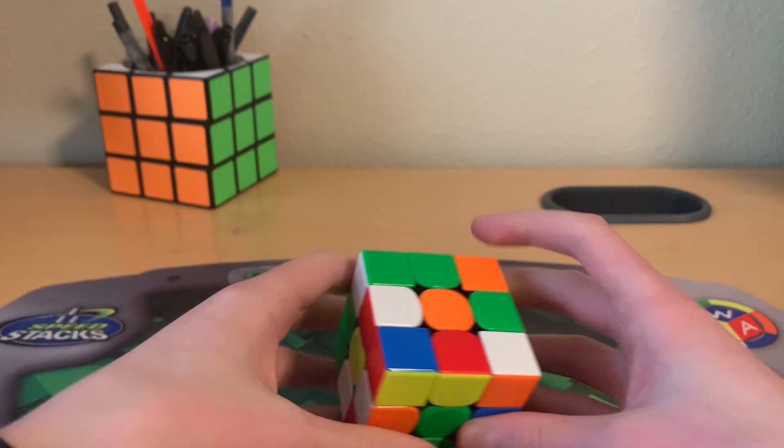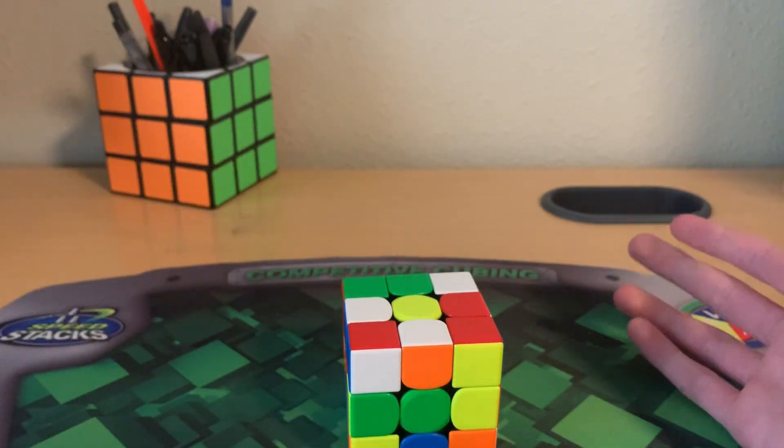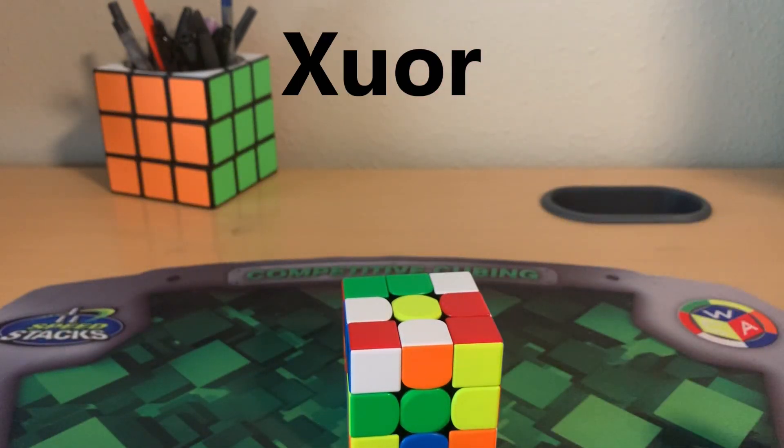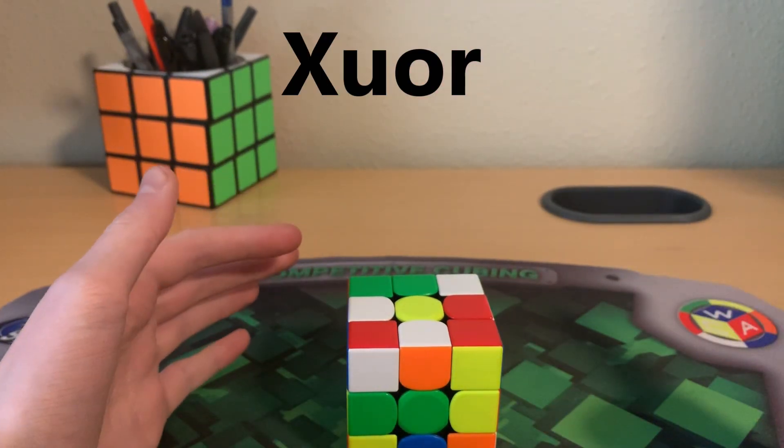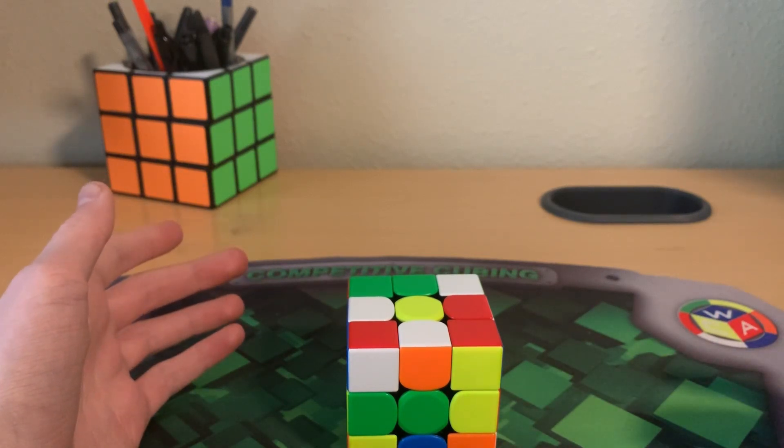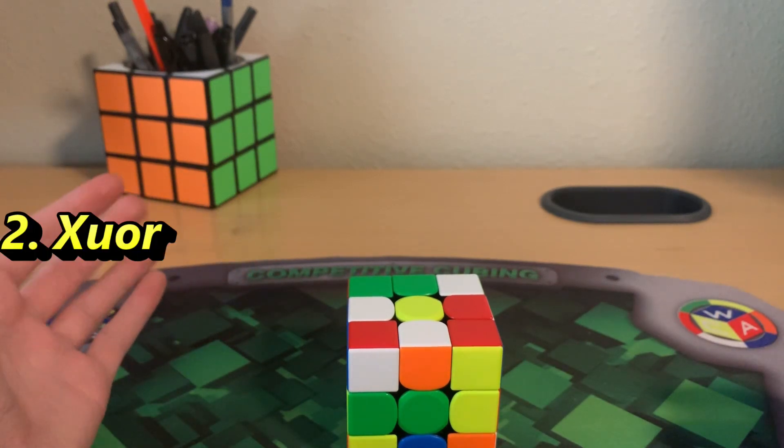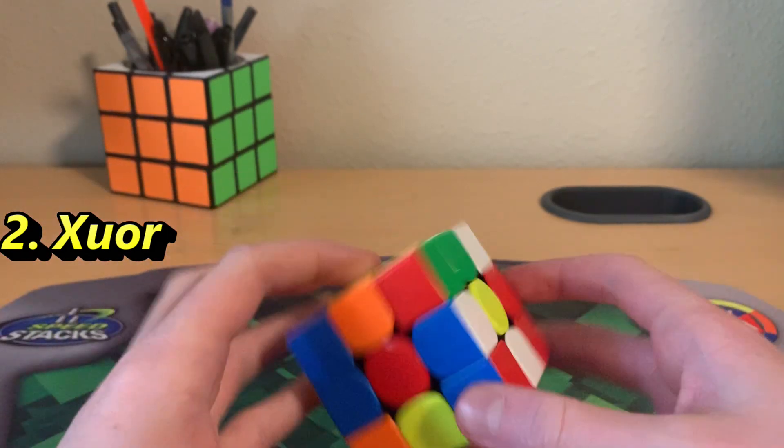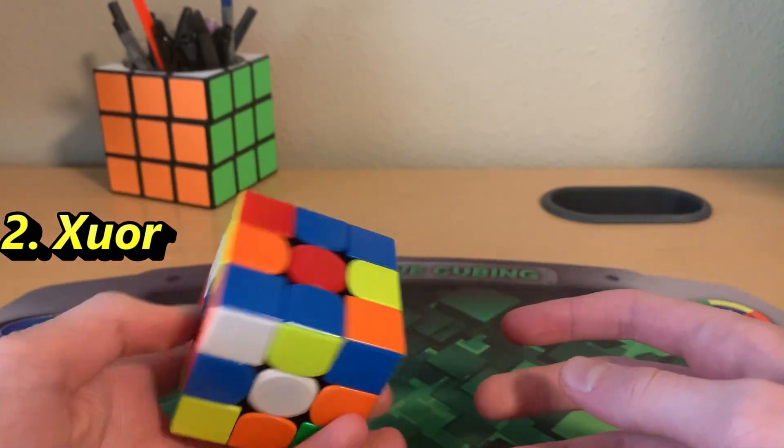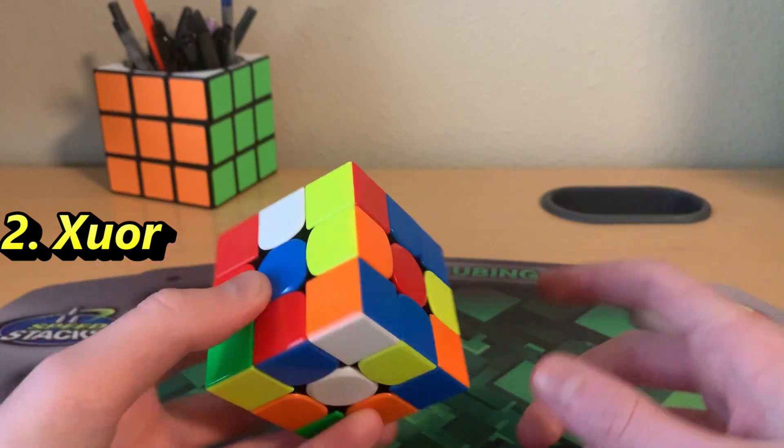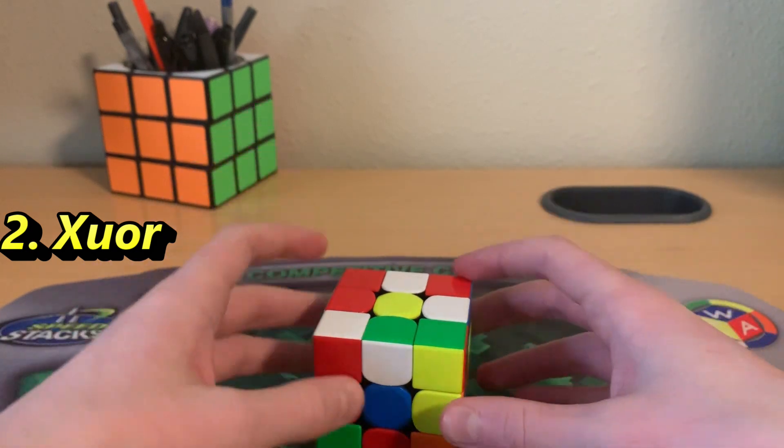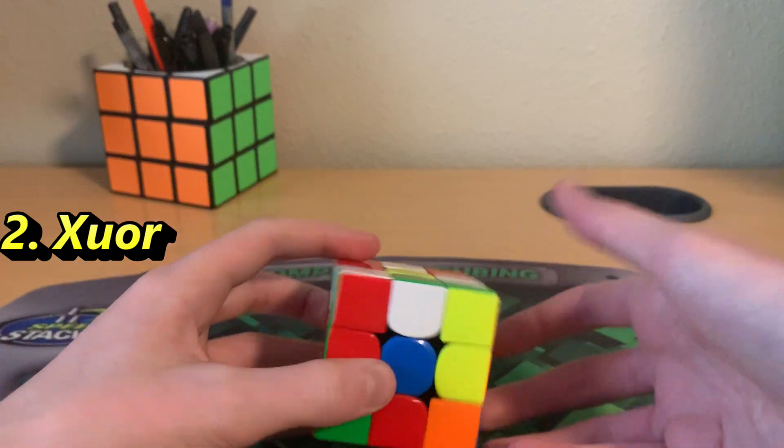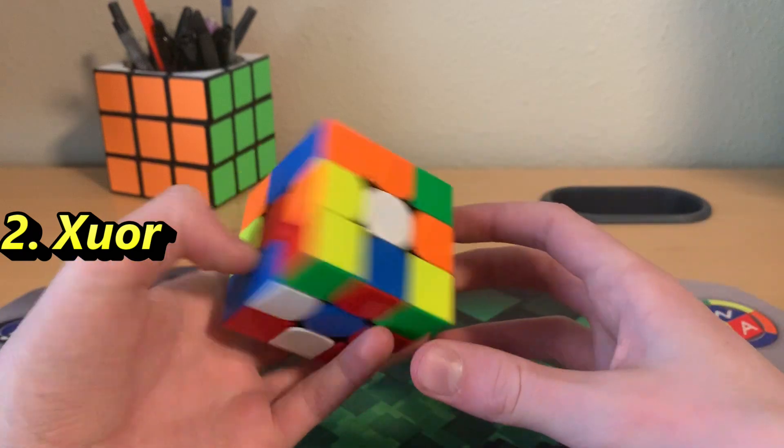Okay, so the next one is reverse RU, also known as XUOR method. So XUOR is just like the word RU but backwards. Wait, no, it's actually XUOR because it's X-U-O-R. So XUOR method. The first step in XUOR method is we're going to do CMLL first. So it's just RU, but CMLL comes first. We solve corners.